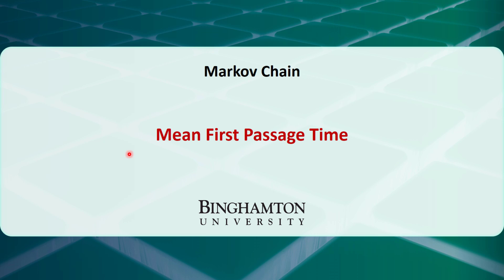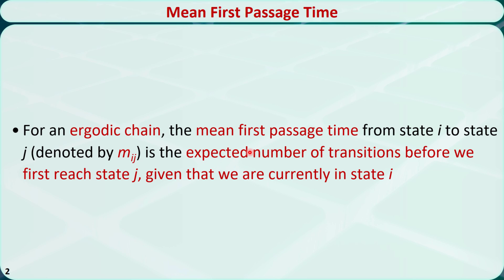In this video, I will talk about how to calculate the mean first passage time for an ergodic Markov chain. For an ergodic chain, the mean first passage time from state i to state j is the expected number of transitions before we first reach state j, given that we are currently in state i. It is denoted by mij.